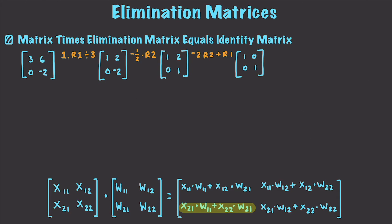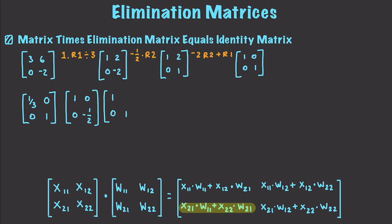Now just by looking at those operations we can create the matrices. For our first operation, dividing row one by three, I put one third in the upper left. The rest is the identity matrix. For the next operation, multiplying by negative one half, I put negative one half in the lower right. For the final operation, multiplying times negative two across, I put negative two in the upper right. We've documented all the changes we want to make.